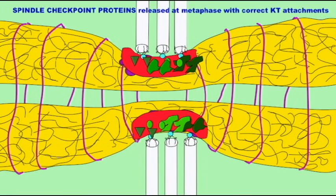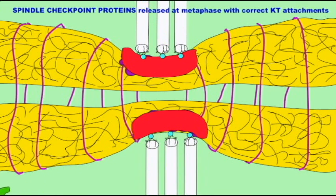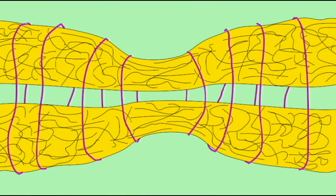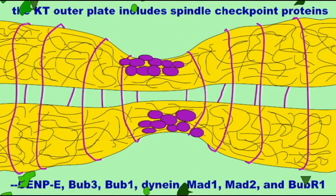And so these spindle proteins are incorporated into the outer plate of the kinetochore. As tension increases between microtubules and the kinetochore, this then would cause the release of these spindle proteins.